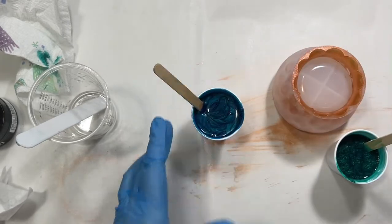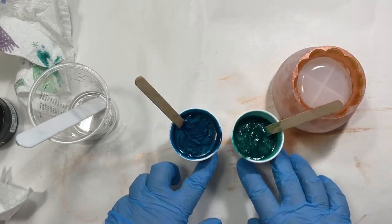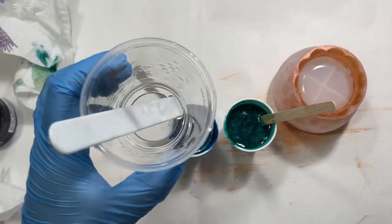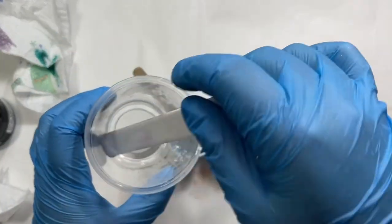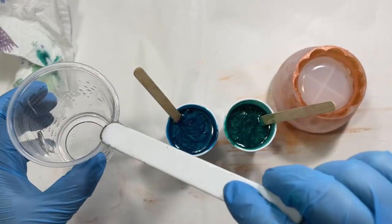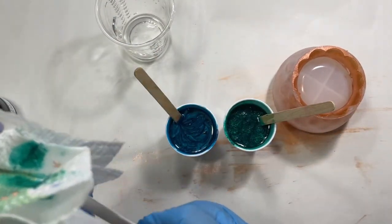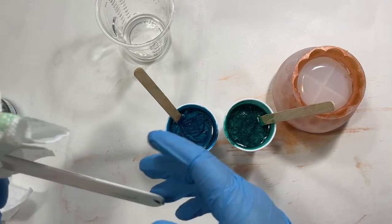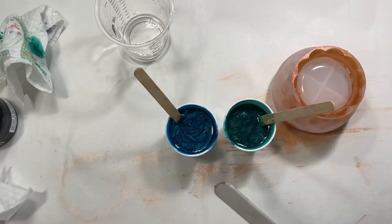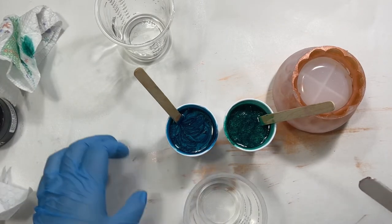All right, perfect. So I want to kind of marble these. Normally I would just pour them back into this cup and do the marbling, but since there's clear in there I don't want to get the clear mixed in, so I'm going to get a clean cup. I try to reuse my cups as much as I can.